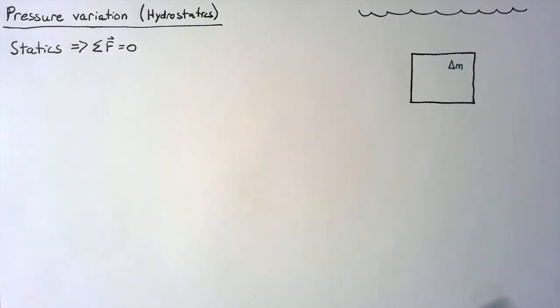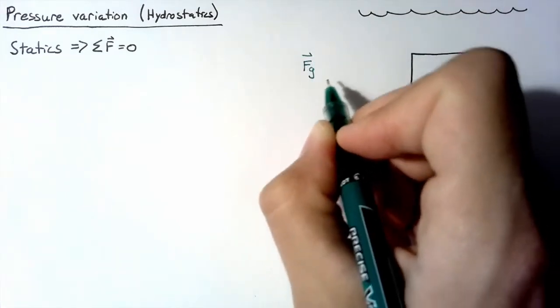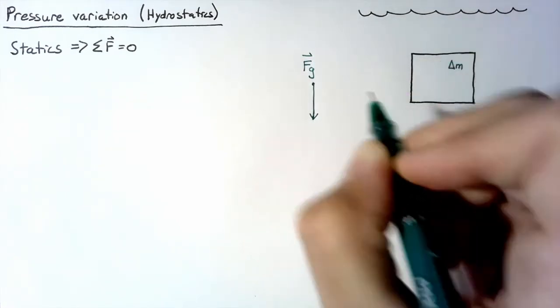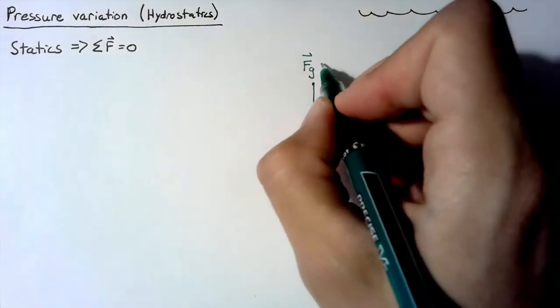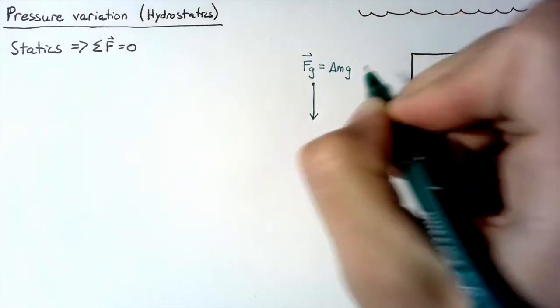So first off, let's start with what we're familiar with. There's going to be a force of gravity that is pulling this thing down, and the magnitude of that is just going to be equal to delta m multiplied by gravity.